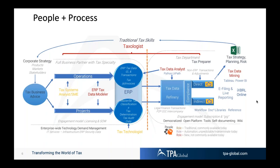If you don't clean data at the source, you put a big burden on the tax data analysts on the right side — those using Python and UiPath as tools to do tax data refinery. Refinery means you get raw data in and extract the relevant data to fit into your VAT or corporate income tax return, or your transfer pricing transaction schedule. You also need to add non-ERP transactions and adjustments so the tax preparer can start the full compliance cycle.